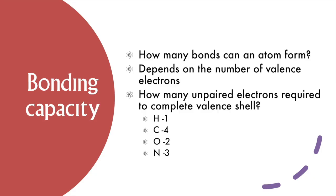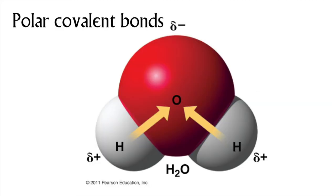Different elements require different numbers of electrons to complete their valence shell, meaning they can form different numbers of covalent bonds. That is determined by how many unpaired electrons are needed to complete that valence shell — for hydrogen, just one; for oxygen, two; nitrogen, three; and carbon, four. This sharing is not always an equal arrangement. Some elements, like oxygen, have a very high affinity for electrons, also called electronegativity. They are greedy with the electrons and pull them more towards their nuclei, making the electrons spend more time around one atom, giving it a partial negative charge — and where there is a partial negative charge, there has to be a partial positive charge somewhere else, as we see on the two hydrogen atoms in water.